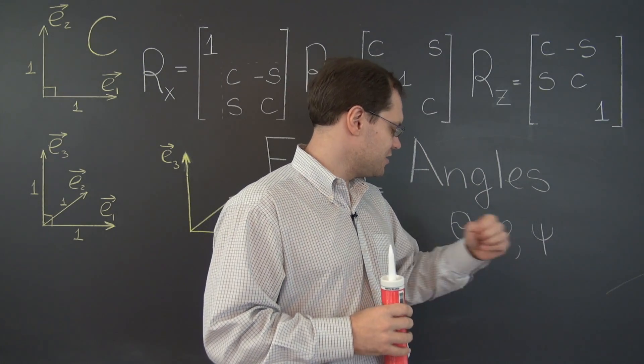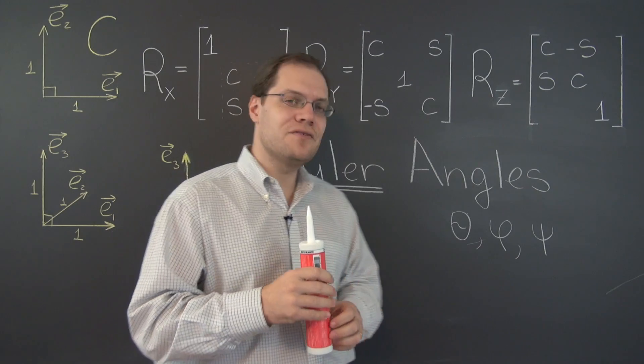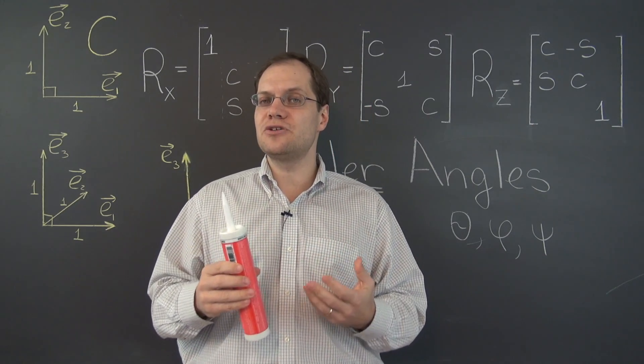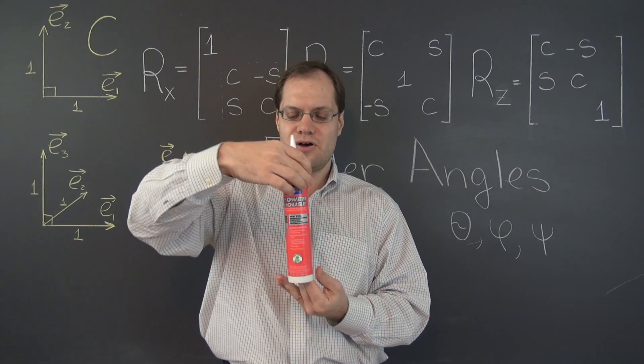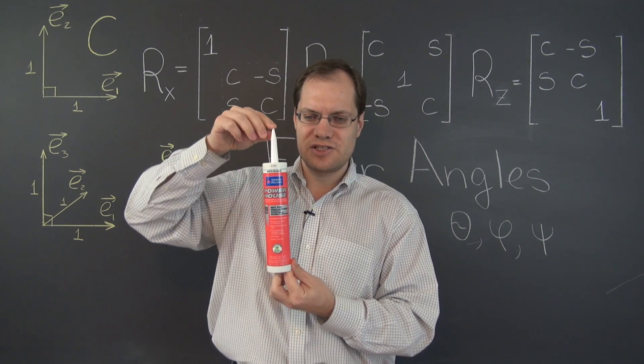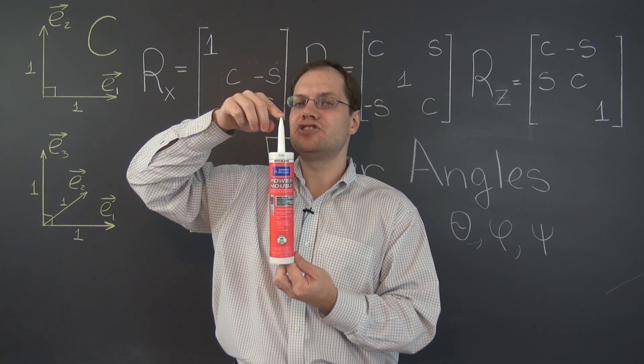And then finally, there is twist. Now all of this specifies the orientation of a body with respect to some reference orientation. So let's call this our initial orientation.